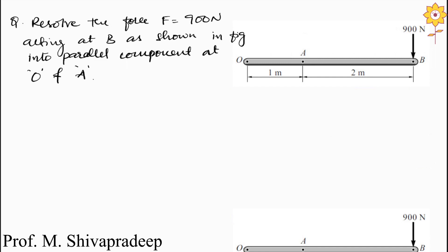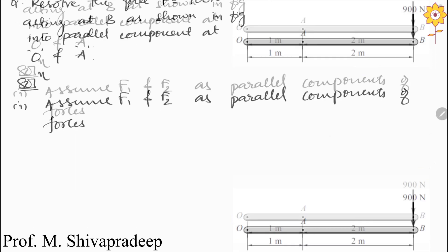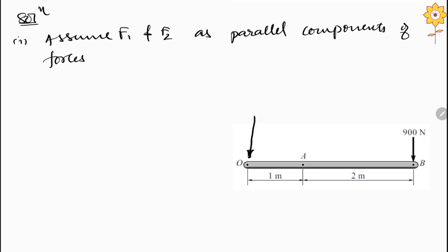So how can we solve it? First, we are going to assume two forces F1 and F2 as parallel components. We are assuming two parallel components of the force. So we can draw two forces acting downward, that is F1 and F2, at point A and point O. This is the given force acting at point B, and we have to find out these two unknown forces: F1 = ? and F2 = ?.